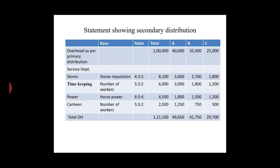Candy department distributed on the basis of number of workers in ratio 5:3:2, giving Department A 2,500, B 1,250, C 750, and 500 reallocated. Total overheads: Department A 49,650, Department B 41,750, and Department C 29,700. Thank you.